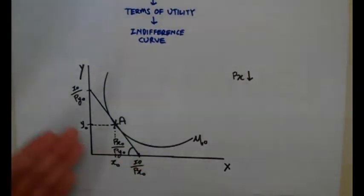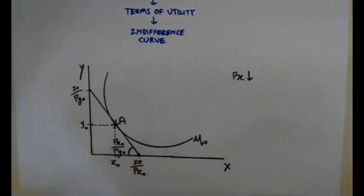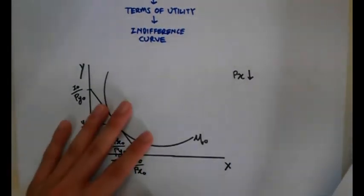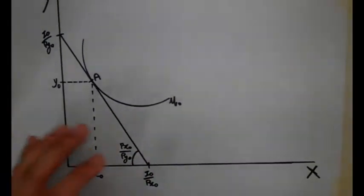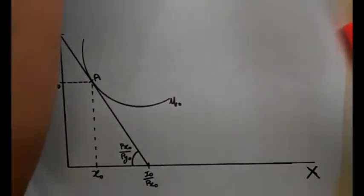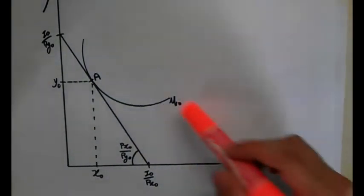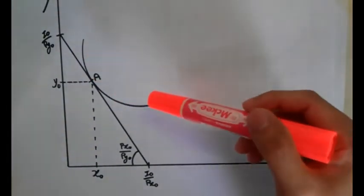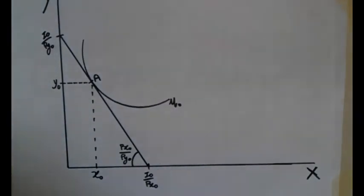We will always start with the initial budget constraint and indifference curve, with initial equilibrium at point A. What we are going to do is drop the price of X. So when the price of X decreases, I rotate the budget constraint outwards. I'm going to be using the color pink to show the substitution effect, and purple to show the income effect. For drawing the indifference curve, I actually use a protractor — you can go buy a protractor so that it will be easier for you to draw your indifference curves.